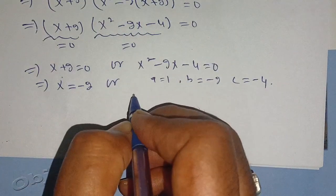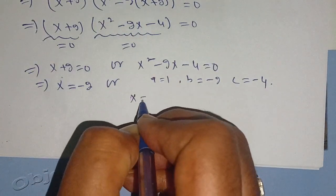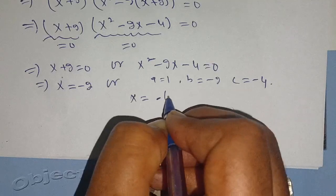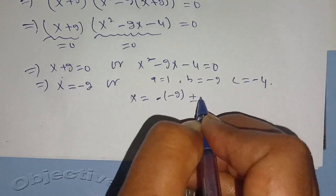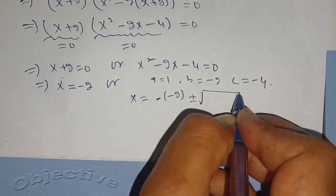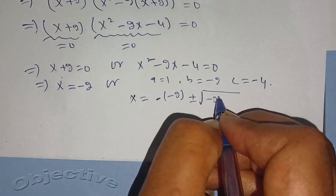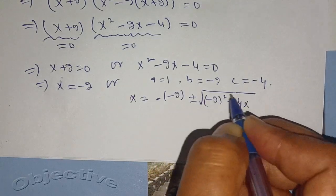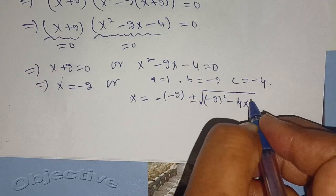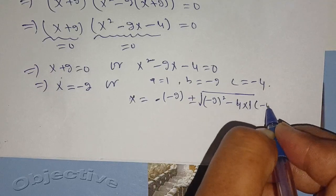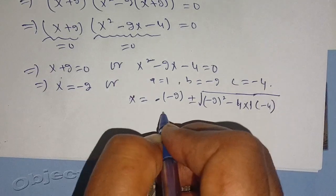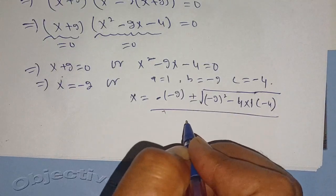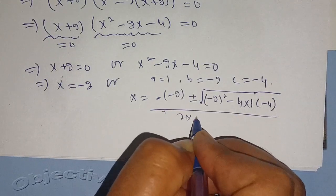Now we get x is equal to minus b — that is minus times minus 2 — plus or minus the square root of b squared, which is minus 2 whole squared, minus 4ac, where 4 times a (which is 1) times c (which is minus 4), divided by 2a, meaning 2 times 1.